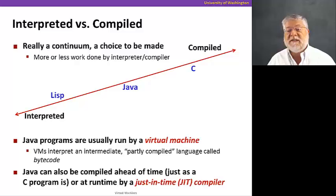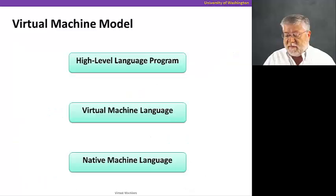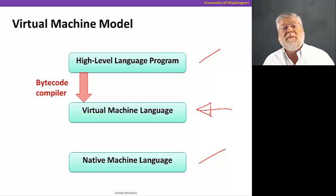Java can also be compiled ahead of time just like C is and turned into a target machine code for a particular CPU. We refer to those as compilers and they can be either at compile time ahead of time or they can be just in time compilers. So if we look at this pictorially, we have a high level language program written in a language like Java. A native machine language, the code, the machine code and instructions for a particular CPU. And the virtual machine language sits somewhere in the middle. So we can have a bytecode compiler that turns our high level language into this virtual machine language.